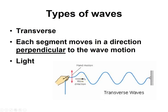The two types of waves to know: the first is called a transverse wave. A characteristic of this is that each segment moves perpendicular to the motion of the wave. So the wave moves horizontally, but if you move a string, you're moving it vertically. An example of this would be a light wave.